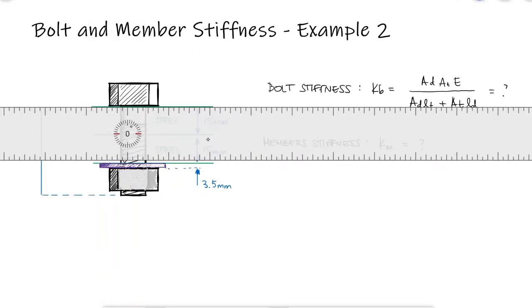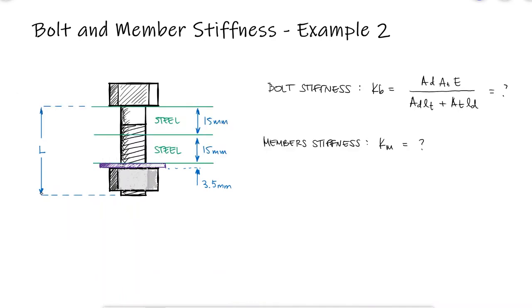During example 1 we determined that the length of the bolt should be greater than the grip, plus the height of the nut. This is so that the nut is fully engaged with the threads of the bolt.